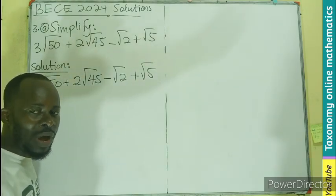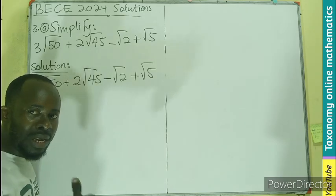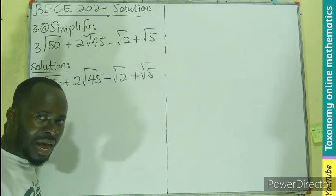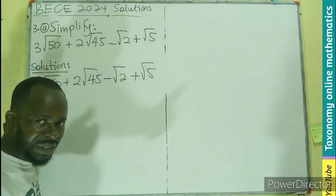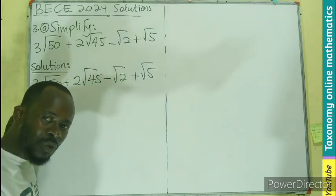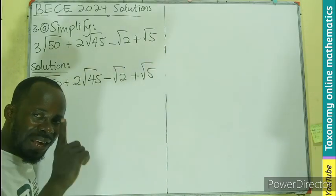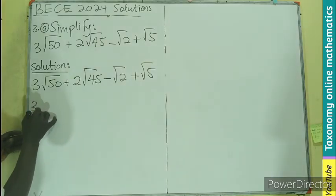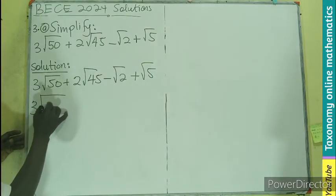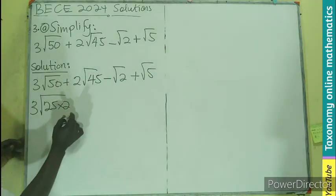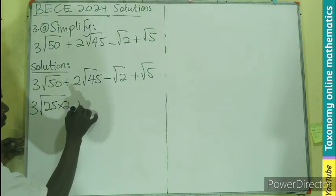I can begin with a non-perfect square using prime numbers to divide. So 2 dividing 50 gives 25. The question is: is 25 a perfect square? If yes, then we write this as 3 times the root of 25 times 2, since 25 times 2 gives us 50.